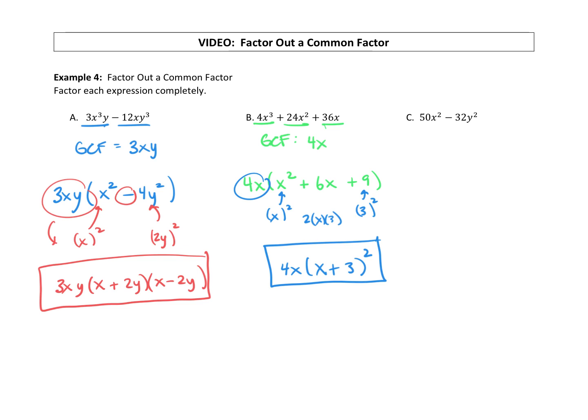All right, last one. Look for a GCF. 50 and 32, that might be kind of tricky. Do they have anything in common? I don't know. But they're both even. If all your terms are even, then for sure there's a common factor of 2, and in this case it is.